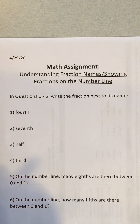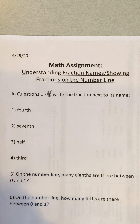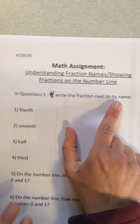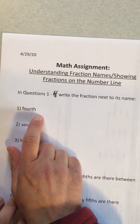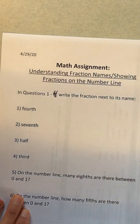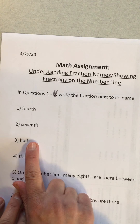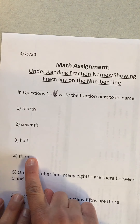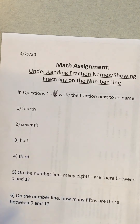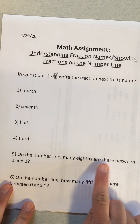In questions one through four, write the fraction next to its name. So 'fourth' — how do we write fourth? You know how to write fourth, just write the number. Seventh, half, third — write those fractions next to their names.